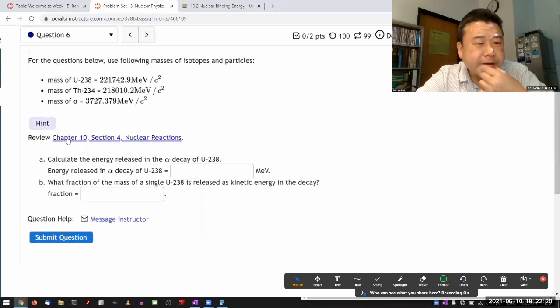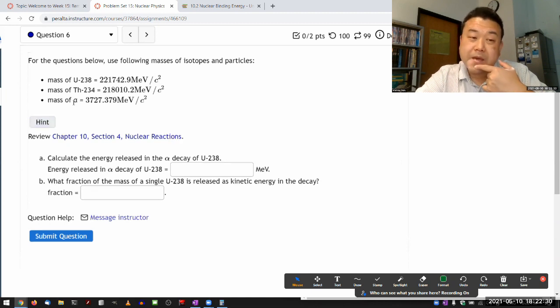You know, I wonder about the numbers here. So it's telling me mass of uranium-238 and mass of thorium-234, and it's giving me mass of alpha particle. And mass of alpha particle is technically different from mass of helium-4.